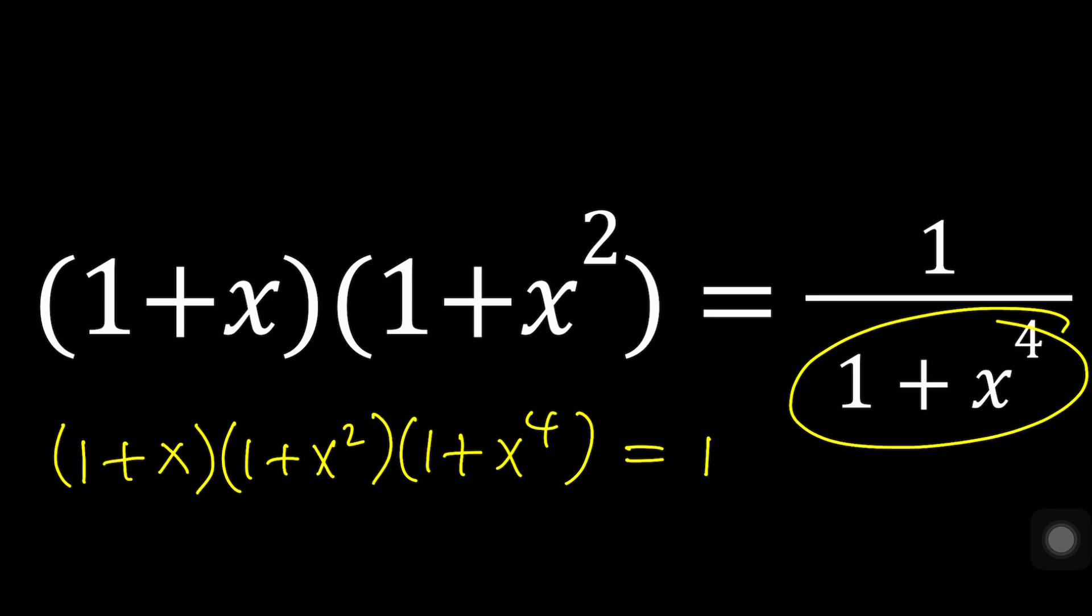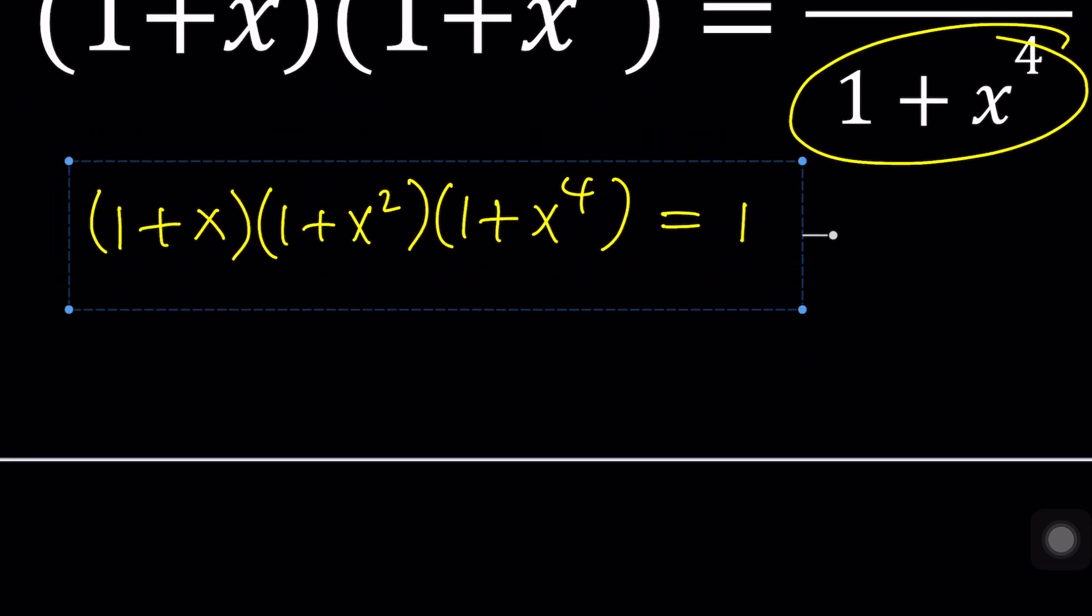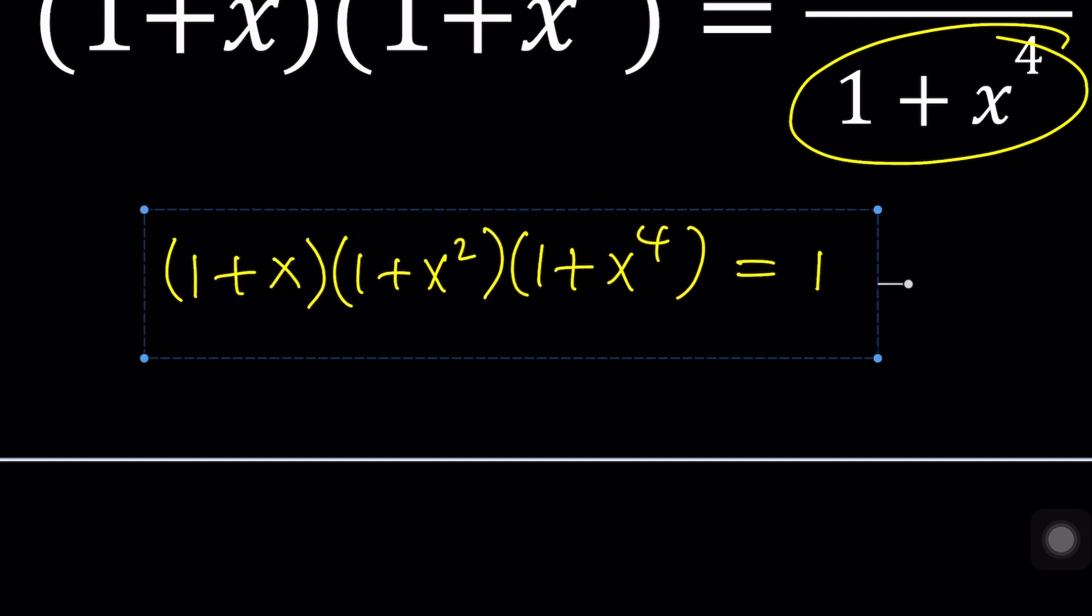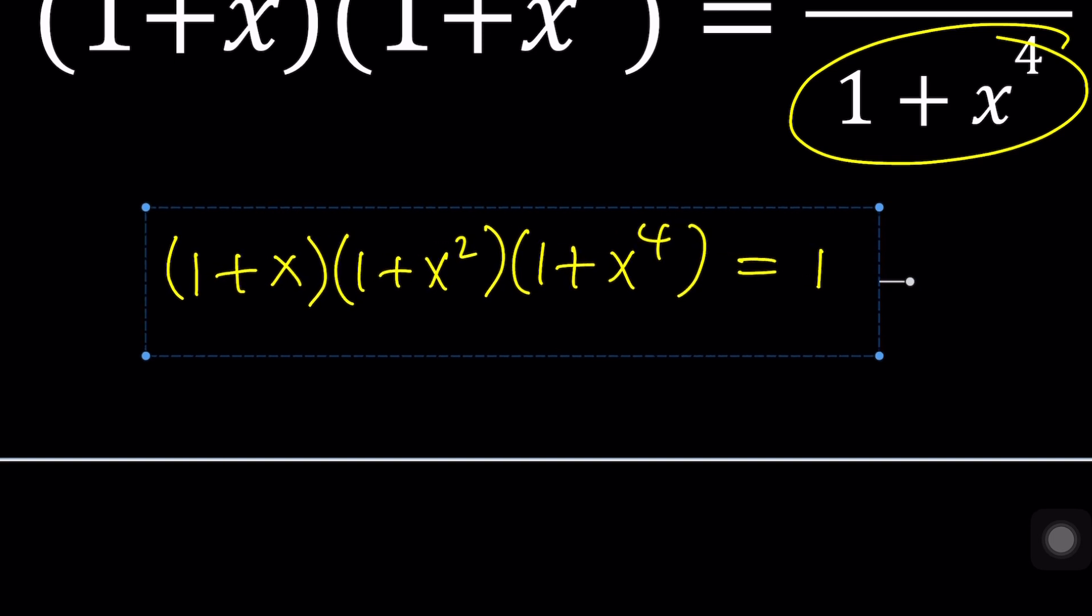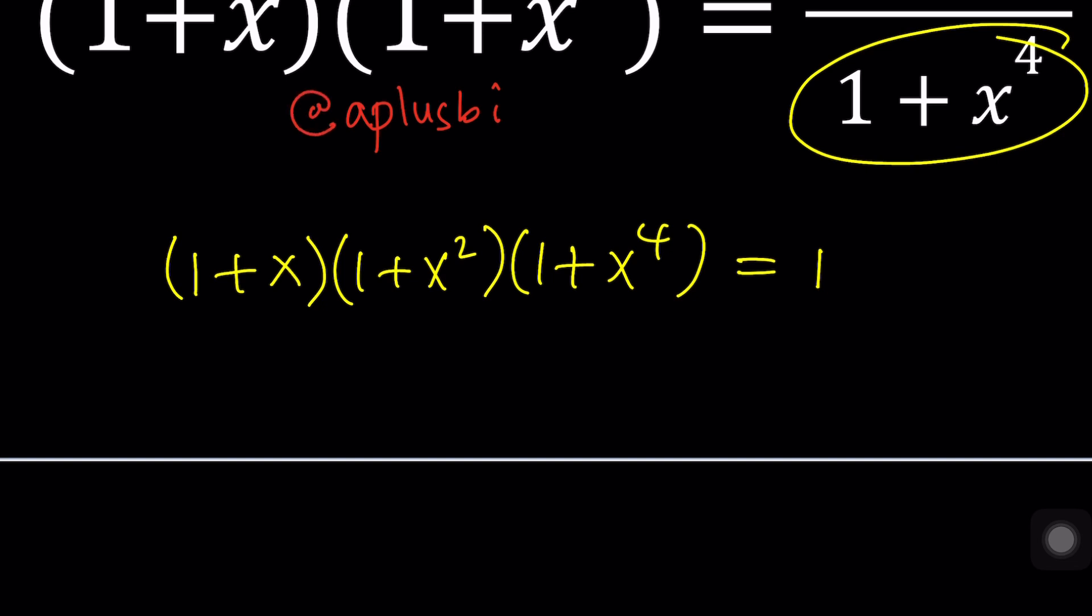So what is that idea? There's definitely more than one way to do this, and I'll probably be presenting a single method here because I want to save the other method for something else. And what is that something else? That something else is actually another channel that I have, and that channel is called A plus bi. A plus bi is a channel that is about complex numbers. If you like complex numbers, or if you want to like complex numbers, you can check it out.